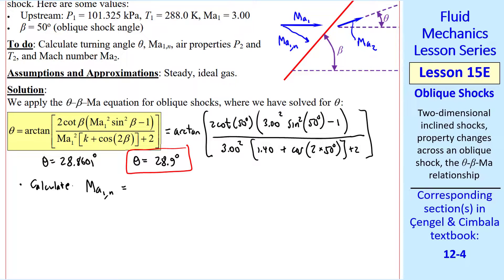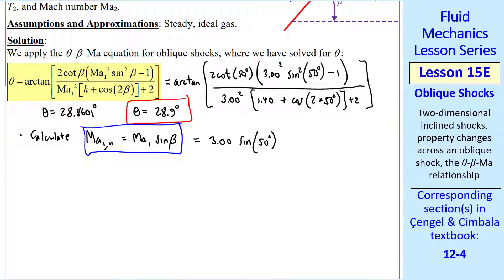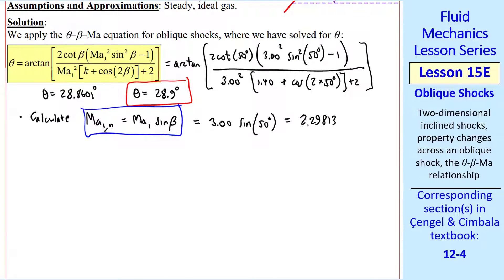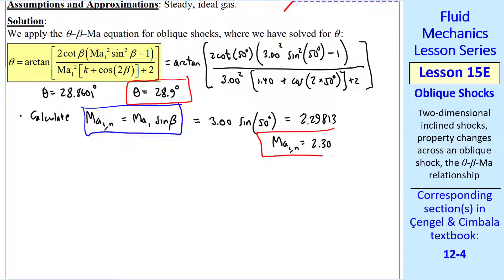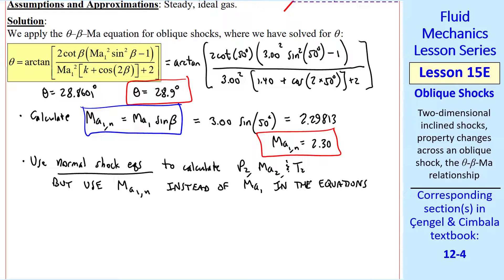Now we calculate the normal component of Mach number 1, where we had this equation. And when I plug in the numbers, I get this value, which I again report to three digits. We use our normal shock equations to calculate the properties across the shock. But we use MA1N instead of MA1 in the equations. This is the key to solving these problems, since again, as I've said before, it's the normal component of Mach number that matters.